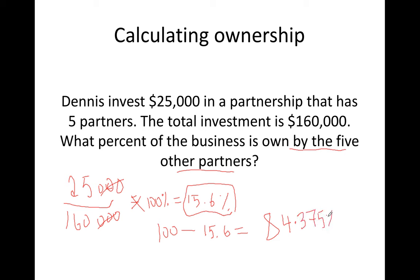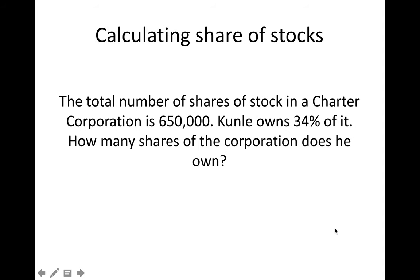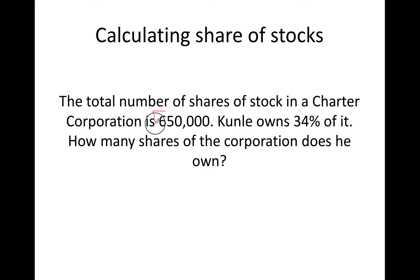So 84.375% is the total percentage owned by the rest of the people. Simple. If you have any questions, please let me know via the comments. Next question: the total number of shares of stock in the Charter Corporation is 650,000. This is a quantity, not a value — not money, just a count, like how many pairs of shoes someone has. So we have 650,000 shares total.